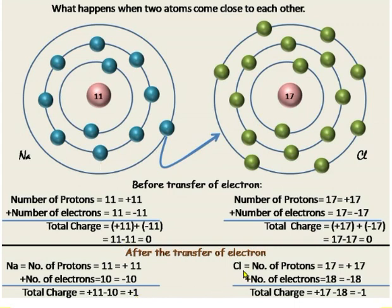For chlorine after the transfer: number of protons = 17, charge due to protons = +17; number of electrons = 18, because it has gained one electron, so charge due to electrons = −18; total charge = +17 − 18 = −1. So after the transfer, the chlorine atom has gained one negative charge.